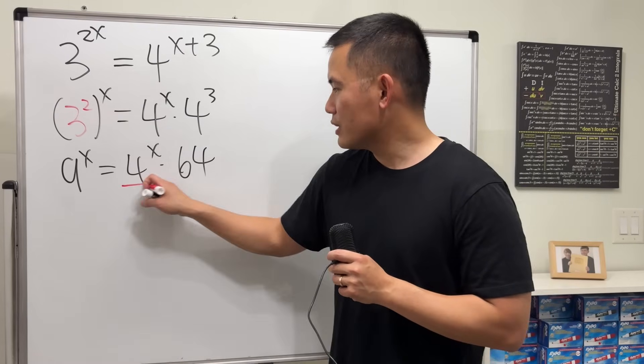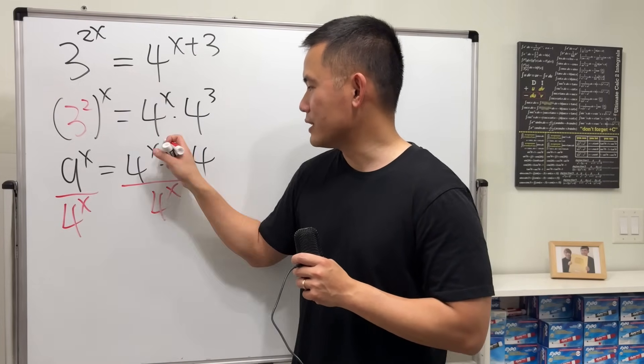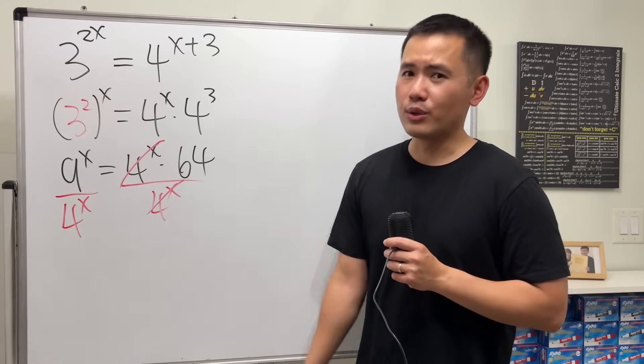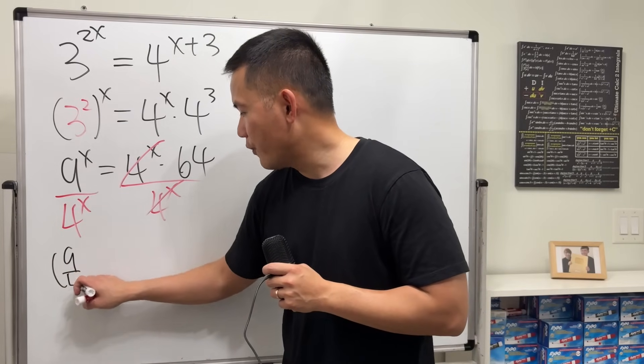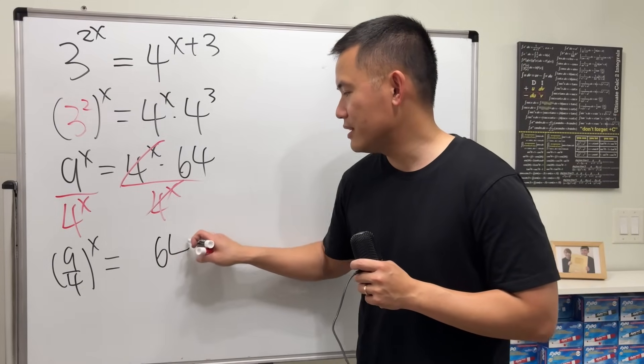Now check this out. I'm just going to divide both sides by 4^x so that we can put all the terms with x on one side. And of course 9 is not equal to 0, so this is totally okay. And then this right here becomes (9/4)^x, and on the right hand side we have 64.